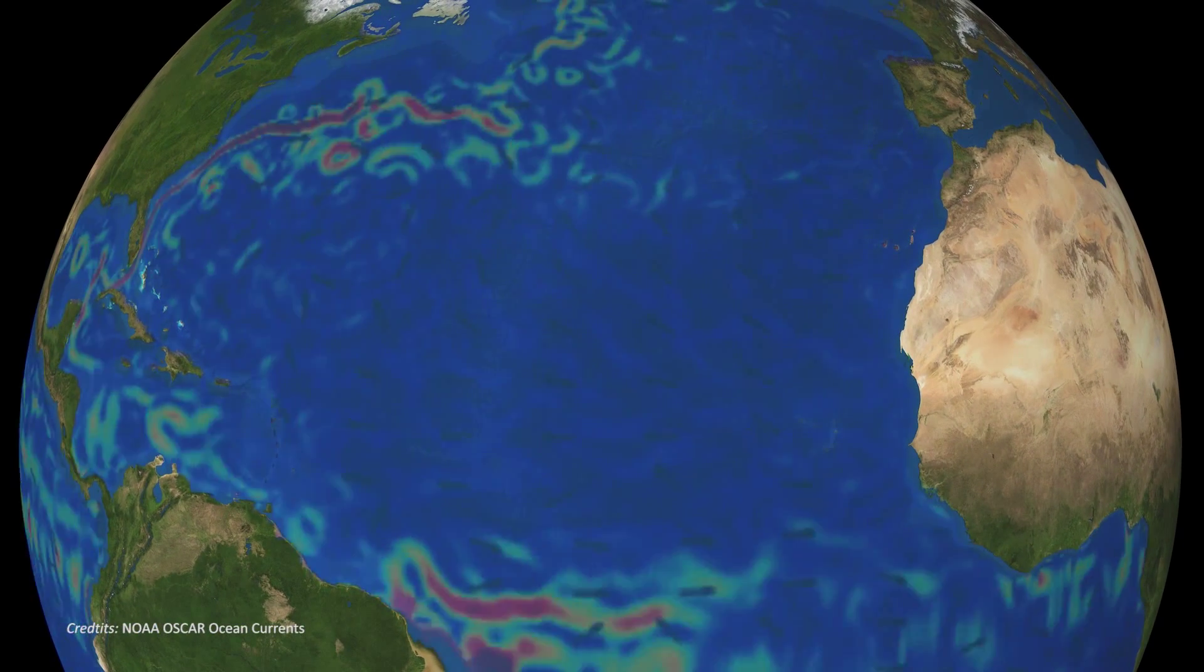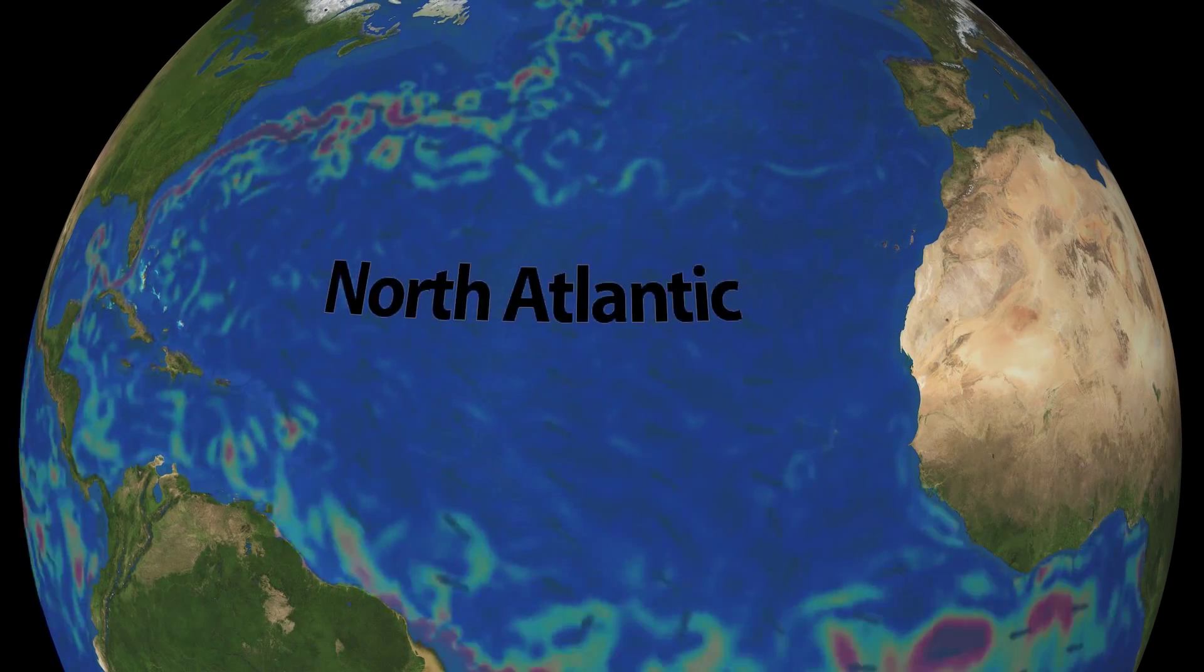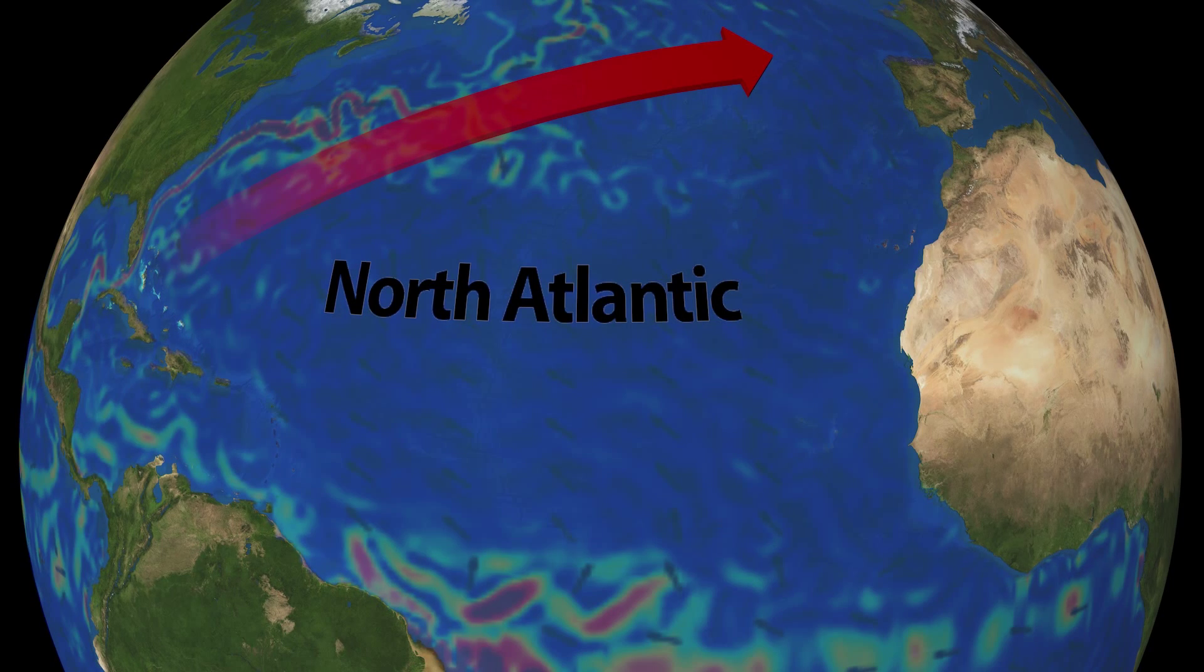That are dominated by intense, narrow boundary currents on the west side of the ocean basin, and broader, weaker return flows on the eastern side of the ocean basin. Transverse currents connect the north-south flowing boundary currents, thereby completing the circuit within the gyre.